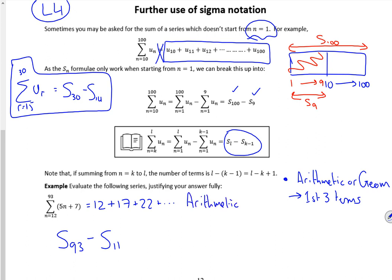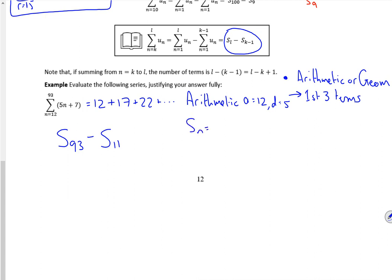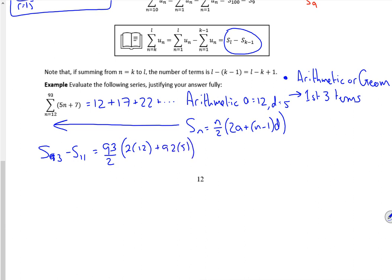So it's AP where a is 12 and d is 5. So I'm going to sum. So remember my sum equation is that. So I'm working out the sum of the first 93 minus the sum of the first 11. I want to include the 12th term, so it's the sum of the first 11 that I'm taking away. Because I want to start at 12, so I chop off the first 11.